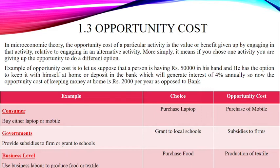We have different kinds of opportunity cost at different levels. From the consumer point of view, assume the consumer has two options: either to buy a laptop or a mobile. If the consumer prefers to purchase a laptop, then the purchase of a mobile would be the opportunity cost. From the government perspective, the government also has two options: either to provide subsidies to firms or give grants to local schools. If the government prefers to give grants to local schools, then the subsidies to firms would be their opportunity cost.